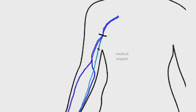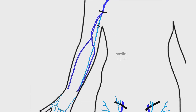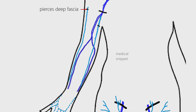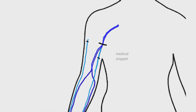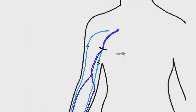The cephalic vein ascends along the anterolateral aspect of the forearm. It passes in front of the elbow. In the arm, the cephalic vein ascends along the lateral border of the biceps muscle. Then it pierces the deep fascia at the lower border of the pectoralis major muscle, runs in the deltopectoral groove, then pierces the clavipectoral fascia, and drains into the axillary vein.